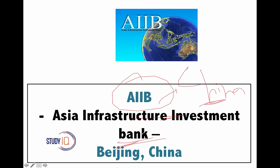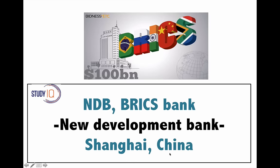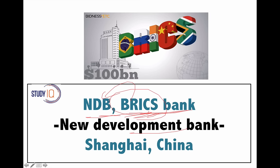Next is NDB — the New Development Bank — also called the BRICS Bank, because the BRICS countries — Brazil, Russia, India, China, and South Africa — have pooled their money in it. Its headquarter is in Shanghai, China.